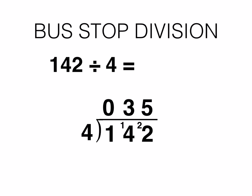The answer is 5 — write this above the 2. You should then have a remainder of 2, so the answer to 142 divided by 4 is 35 remainder 2.